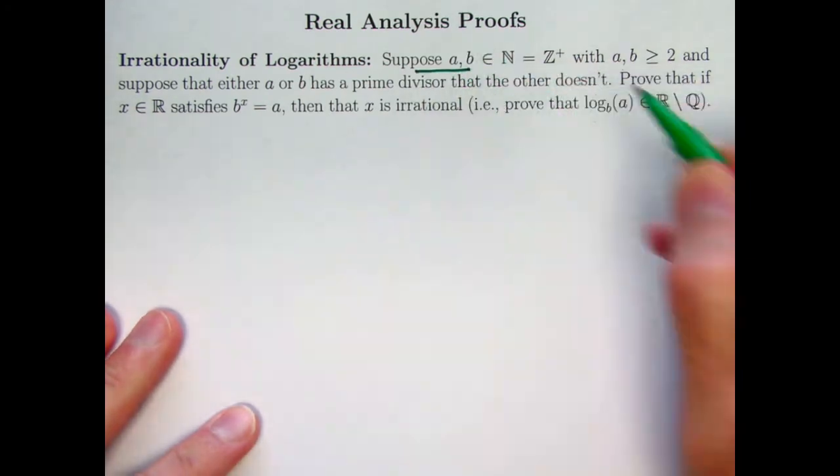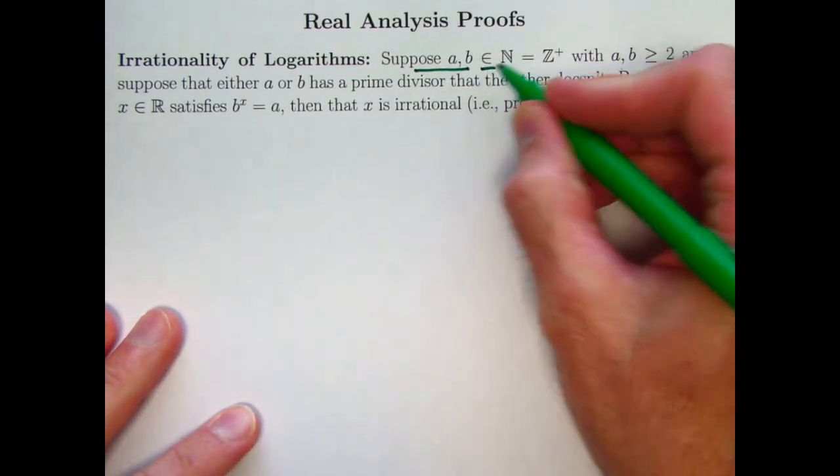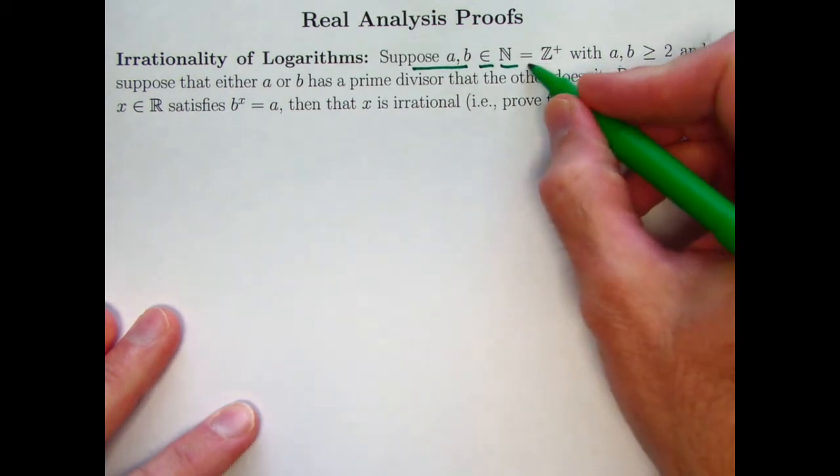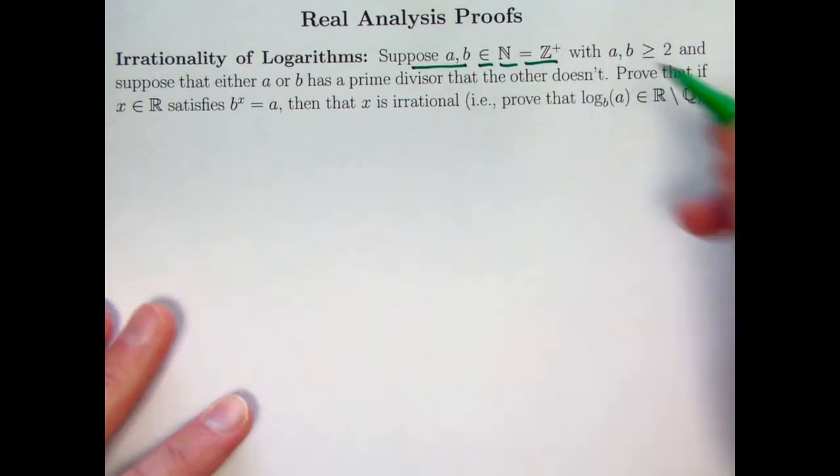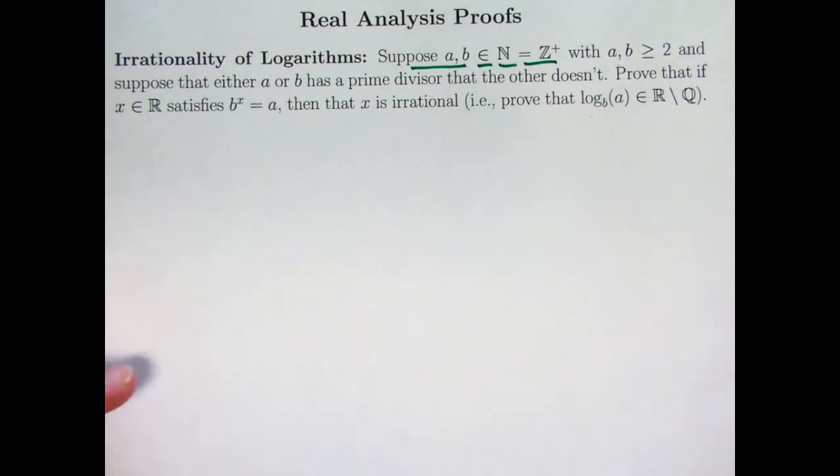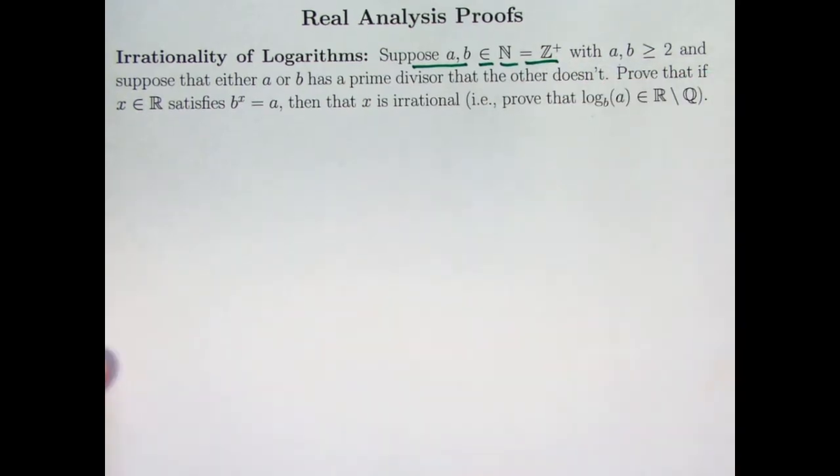So I'm going to suppose I've got two numbers here, a and b. They're elements of N, which stands for the set of natural numbers. Also, you could label that as Z plus. Z stands for zahlen, German word for numbers. It's the set of integers, and if I put a plus sign there, that means positive integers: 1, 2, 3, 4, 5, 6, etc. I'm using both notations just to emphasize that I could. You really don't have to use both. You can choose one or the other.